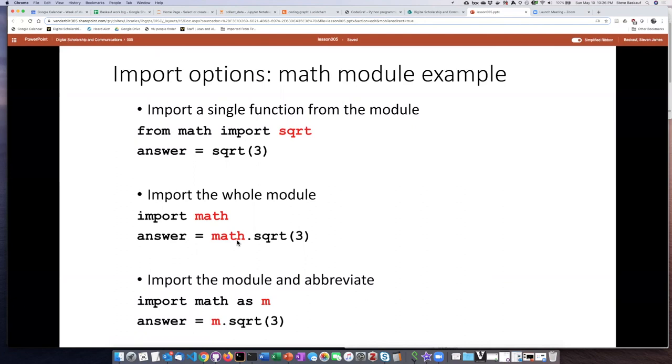An alternative that's a little less annoying is to import the module but assign it to an abbreviation. If we say 'import the math module as m,' then instead of having to write out 'math.sqrt,' we can simply say 'm.sqrt,' and that's a lot easier.